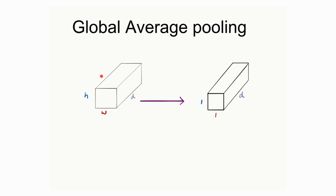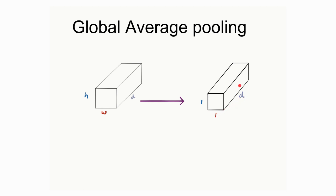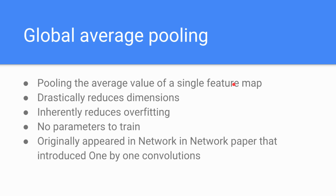Let's say we have an input feature map of dimensions H × W × D. When we pass this input into a GAP operation, it calculates the average value of each and every single feature map and returns that average value into the output node. Since we have D number of feature maps in our input layer, we have D number of nodes in the output layer.